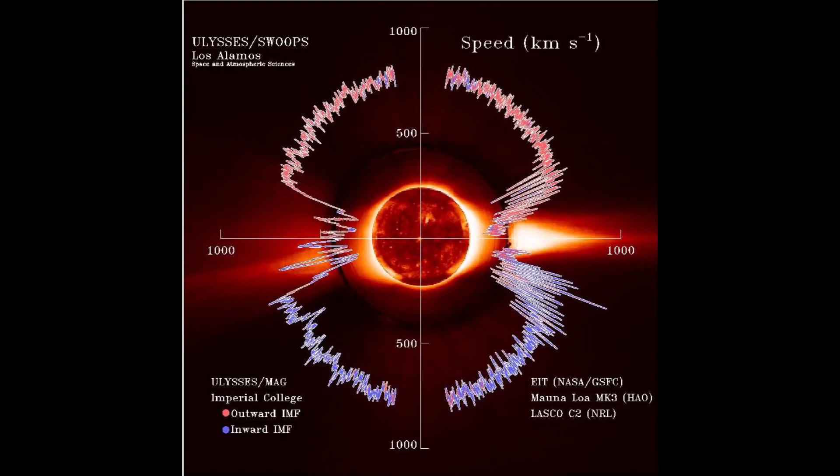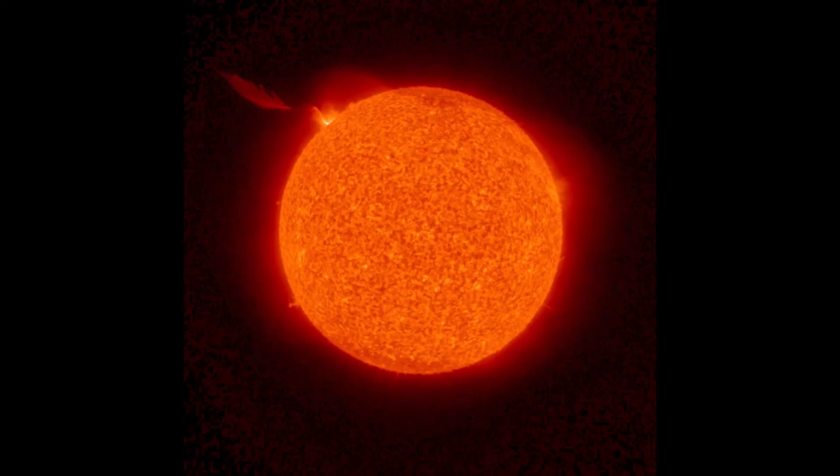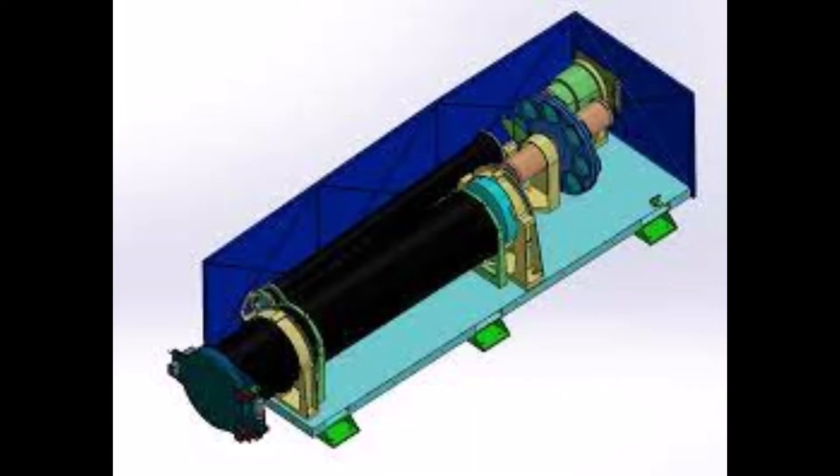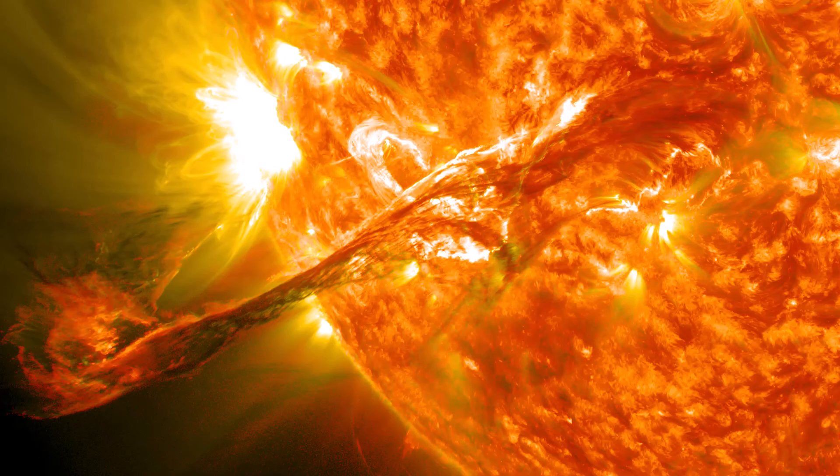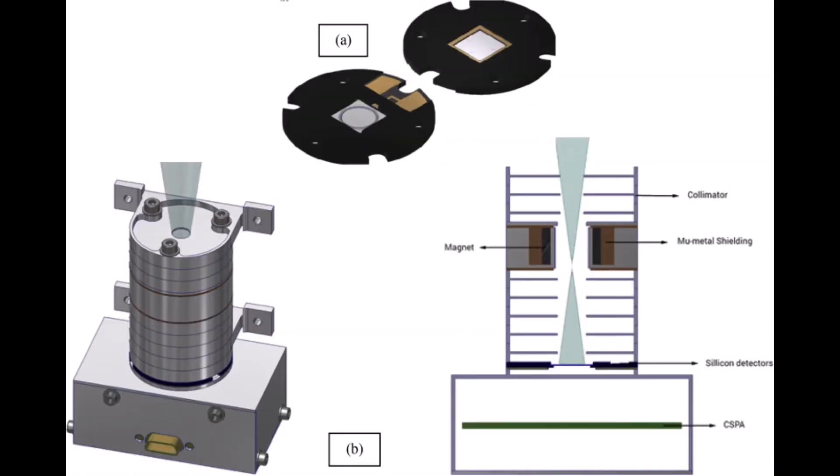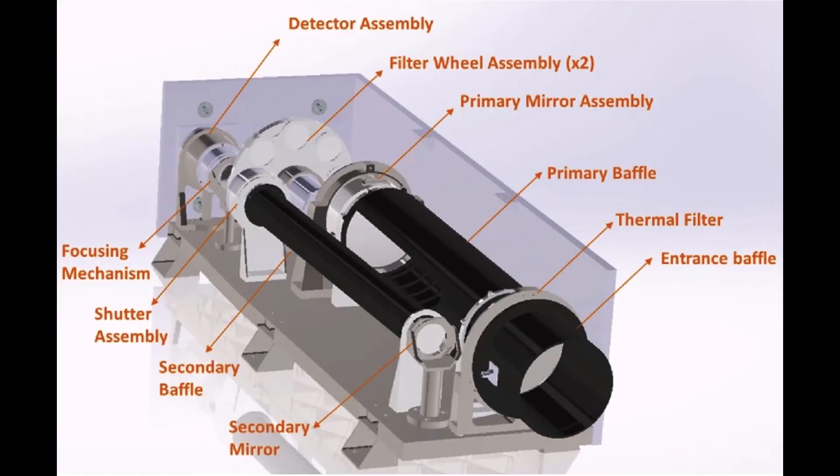Solar ultraviolet imaging telescope to image the spatially resolved solar photosphere and chromosphere in near ultraviolet. Aditya solar wind particle experiment to study the variation of solar wind properties as well as distribution and spatial characteristics.